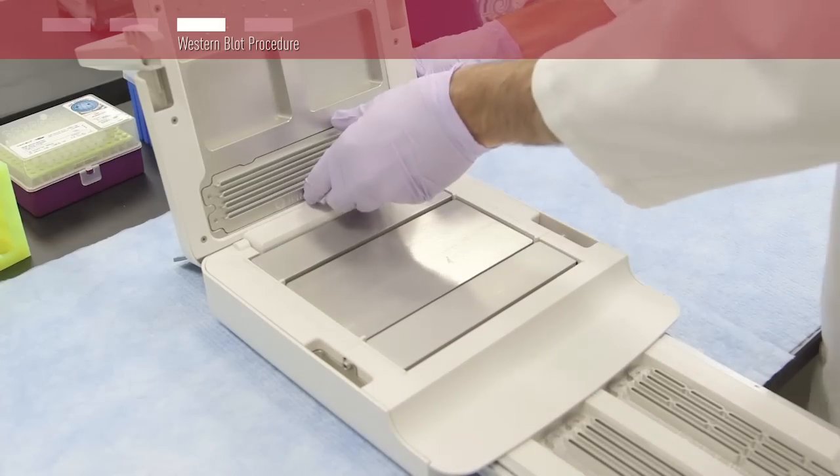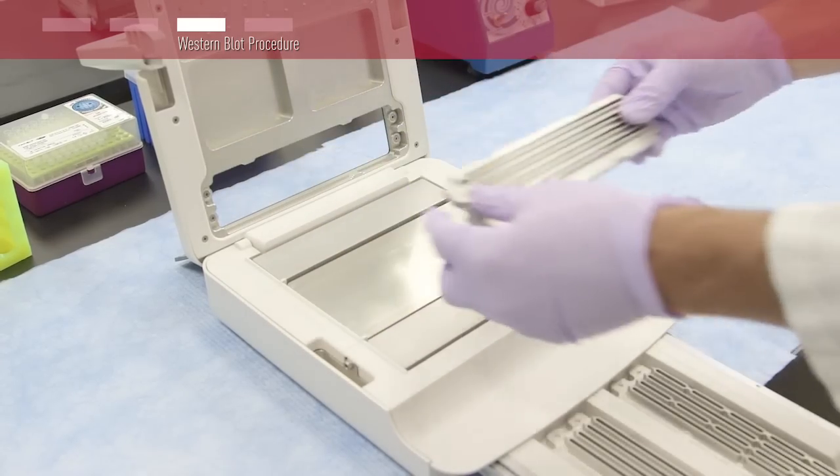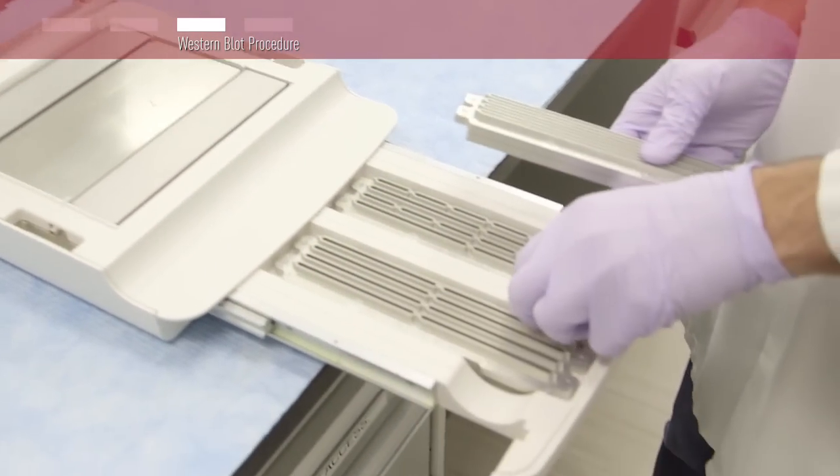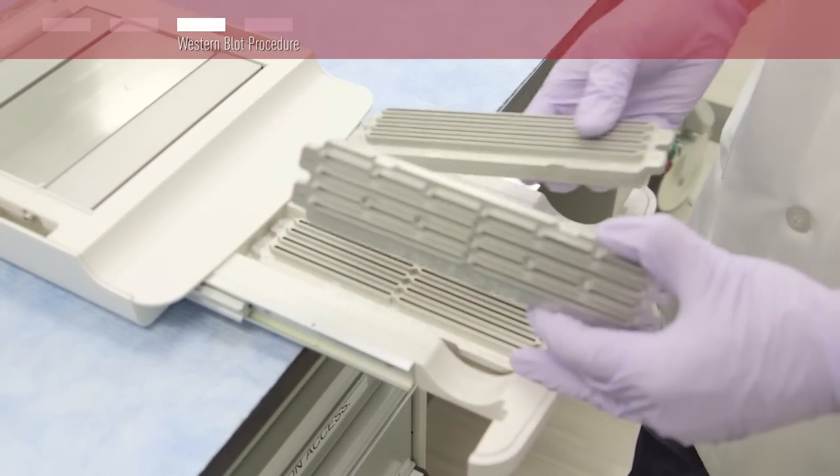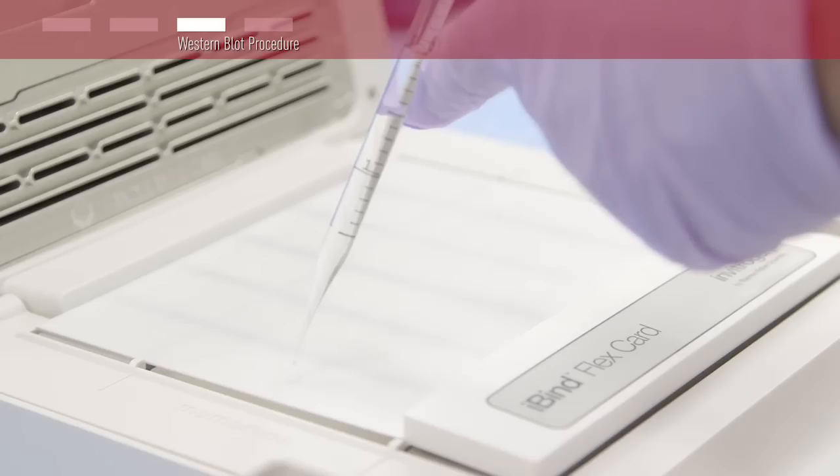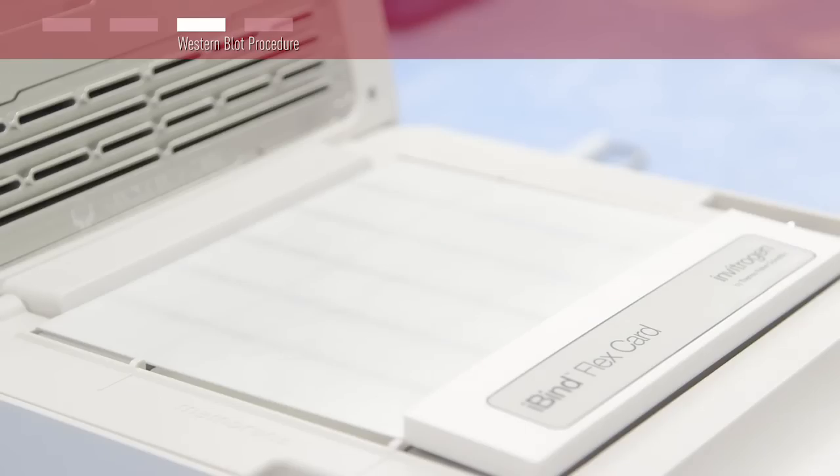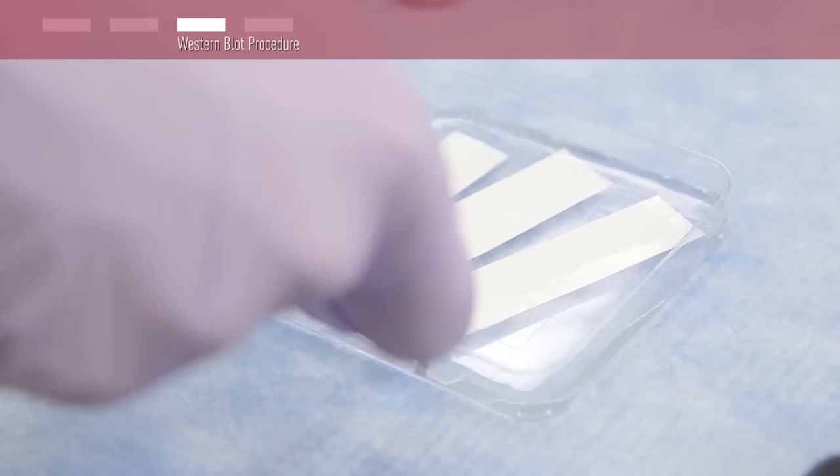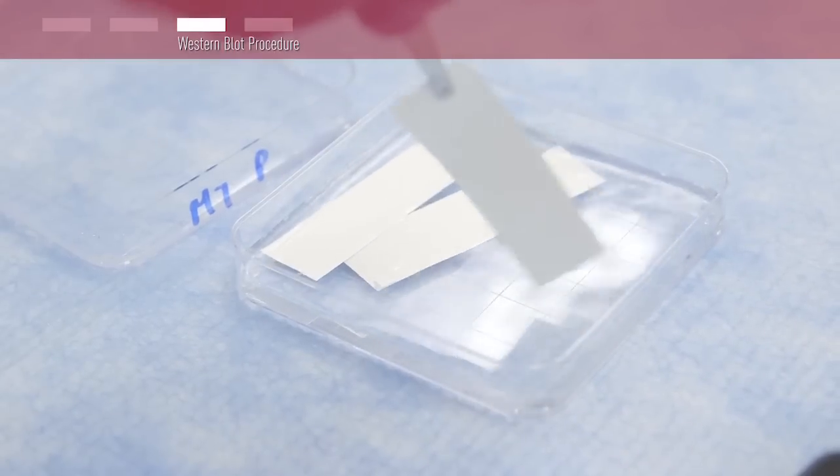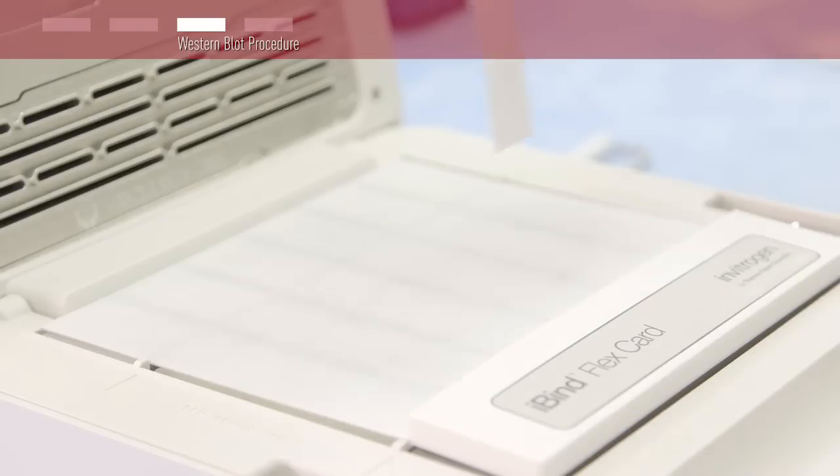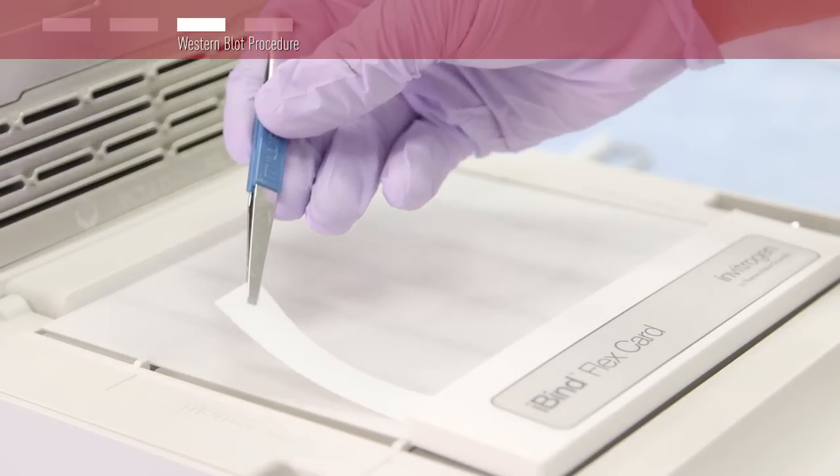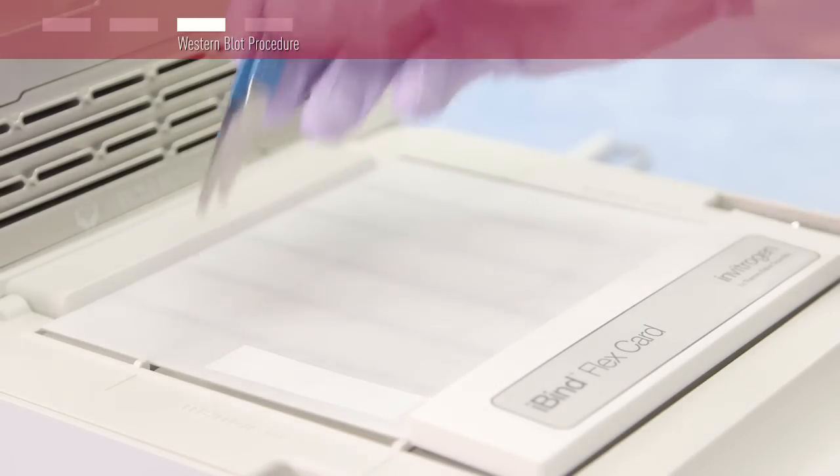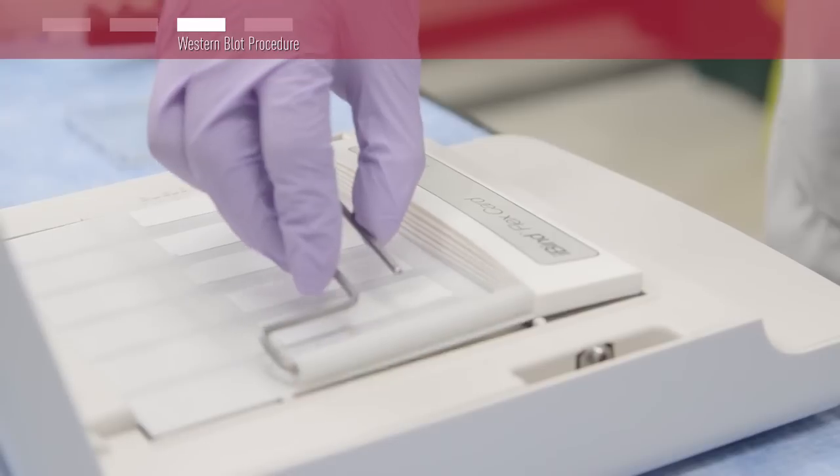In order to process up to 6 vertically cut strip blots, start by installing the multi strip well insert. Add an additional 2 milliliters of 1X iBind Flex solution to the card, allowing it to pool per the quick reference card for the multi strip well insert. Use the alignment guides to place your blots in the white spaces between the black lines. Continue with rolling the blots to remove air bubbles.